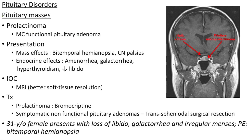First let us see about pituitary masses. Prolactinoma is the most common functional pituitary adenoma. The clinical features of pituitary masses include mass effects like bitemporal hemianopsia and cranial nerve palsies. Bitemporal hemianopsia occurs due to compression of the optic chiasm. There will also be endocrine effects like amenorrhea, galactorrhea, hyperthyroidism and decreased libido. The investigation of choice for pituitary masses is MRI, because it has better soft tissue resolution.